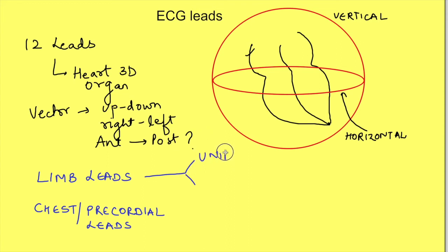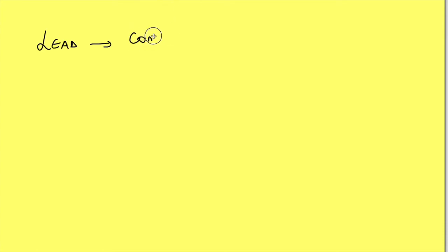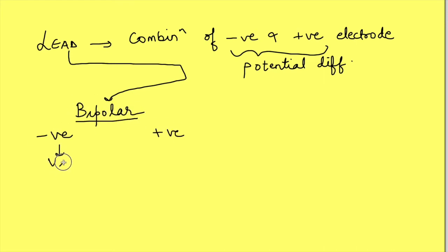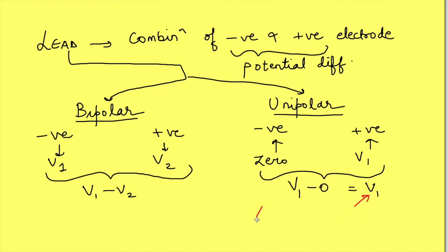These leads are limb leads and chest leads. Among limb leads we have bipolar limb leads and unipolar limb leads, and chest leads are all unipolar. A lead records the potential difference between its two electrodes - both unipolar and bipolar leads do that. In bipolar leads, both electrodes are at some potential and the lead records the difference between them. In unipolar leads, one electrode is at zero potential, so the lead effectively records the actual potential at the active electrode.